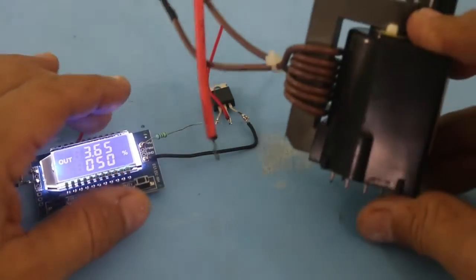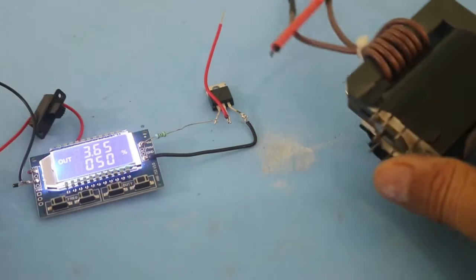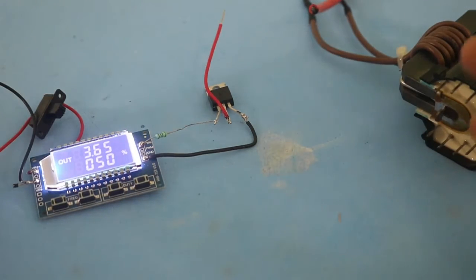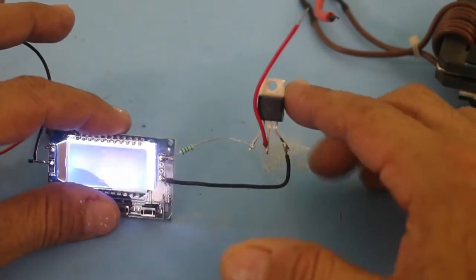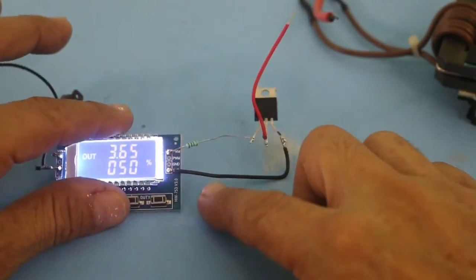In order to feed the primary of the flyback, we need a minimum of 2 or 3 amps, even more. So, I am using the MOSFET to obtain a higher current at the output.